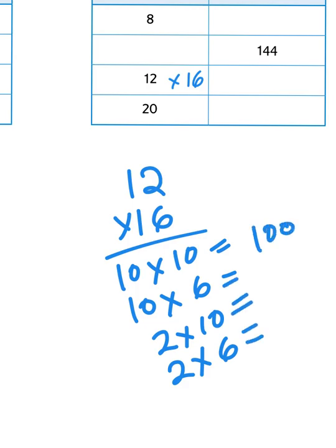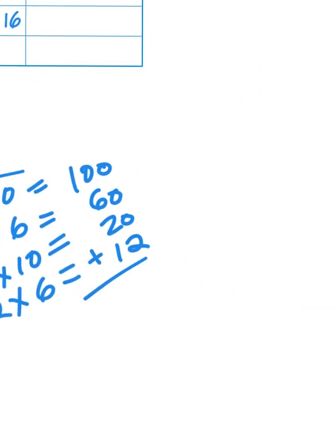Well, 10 times 10 is 100, 10 times 6 is 60, 2 times 10 is 20, and 2 times 6 is 12. If I add all those four partial products together, I'm going to get a total of 192.